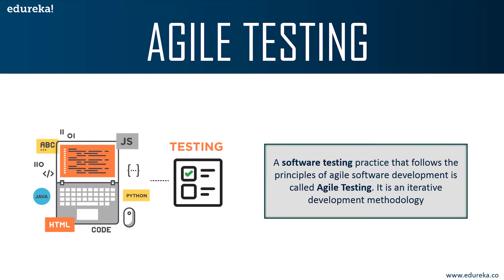Agile is an iterative development methodology where requirements evolve through collaboration between the customer and self-organizing teams. Agile aligns development with customer needs — it is not sequential but a continuous process. This methodology is also called a release or delivery driven approach since it gives better prediction on workable products in short durations of time.